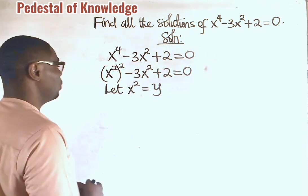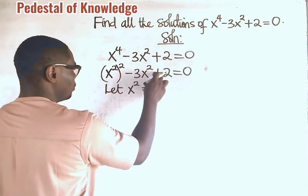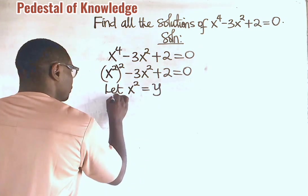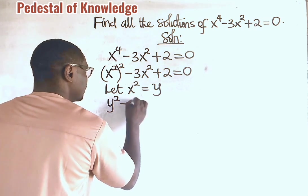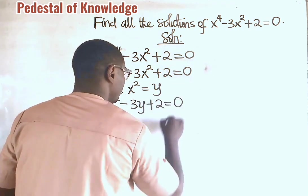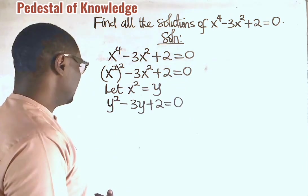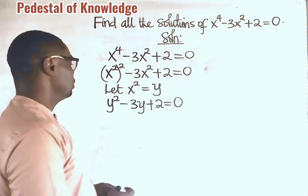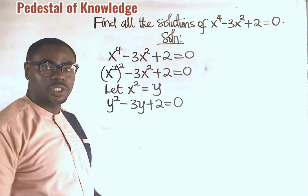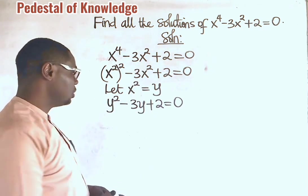That means that anywhere we see x squared in this expression, we replace it with y. So, here becomes y squared minus 3y plus 2 is equal to 0. It is now very clear that we have reduced the polynomial from degree 4 to degree 2, which is a quadratic expression. So, we can find the roots easily.